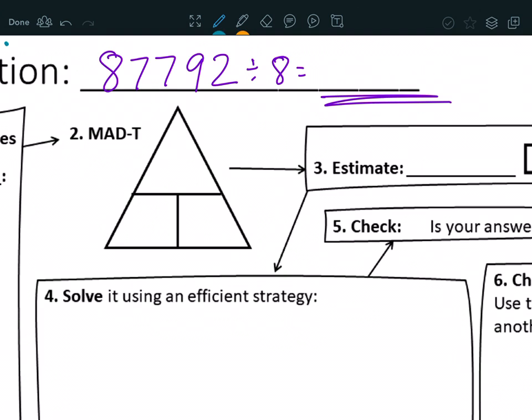Now I'm going to do my MAD T. I know that I'm dividing a number, so the number that I'm dividing goes at the top, 87,792 divided by eight, and this number here is going to be smaller than this number there, because I need to break 87,792 into eight parts.